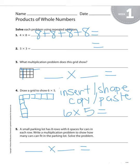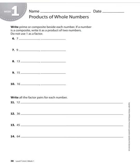The directions for six through ten say: write prime or composite beside each number. If a number is composite, write it as a product of two numbers. Do not use one as a factor. So you can definitely use your factor chart here if you need to.